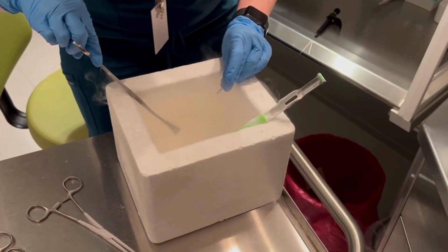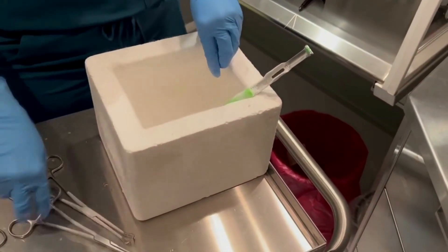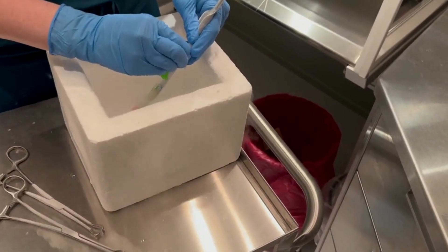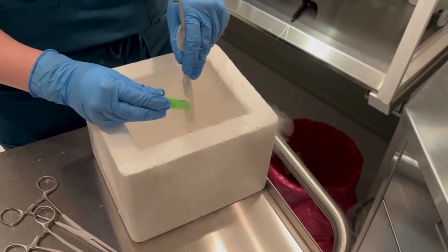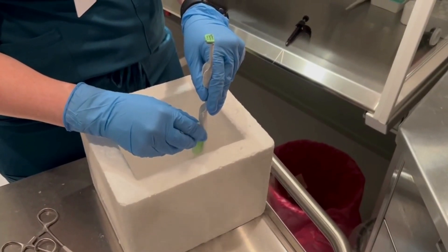We place the cap on the tip and then the straw is placed in what is called a cane. And this is where it will stay in the storage from here on.